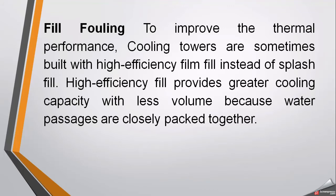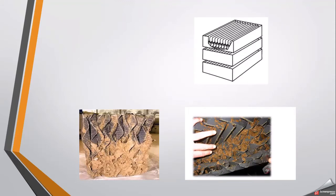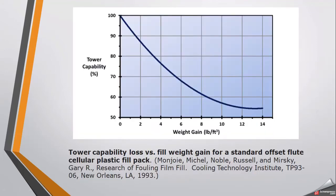The film fill breaks water into smaller droplets, making it easier to cool the water and improving the efficiency of the cooling tower. These images show cut views of the film fills and how they become fouled — material deposits on the film and block the passage of water and air, creating a performance problem.